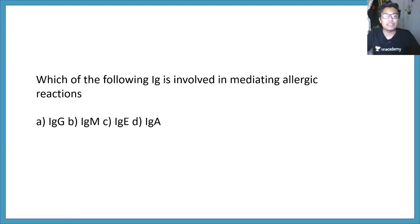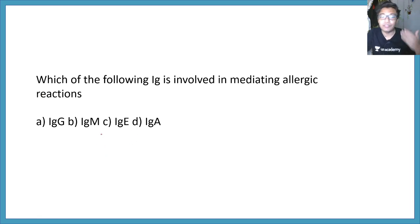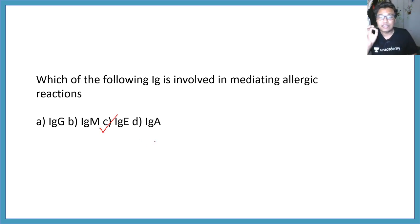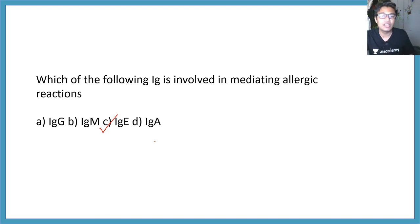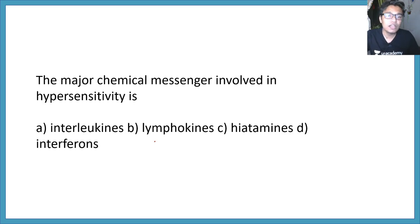Which of the following is involved in mediating allergic reactions? The correct answer is IgE. IgE is the least abundant antibody and it is required for allergic reactions. If you want to know how IgE is involved in allergic reaction or type 1 hypersensitivity reaction, your answer is in the I button. The next question: the major chemical messenger involved in type 1 hypersensitivity is — interleukins, lymphokines, histamines, or interferons?